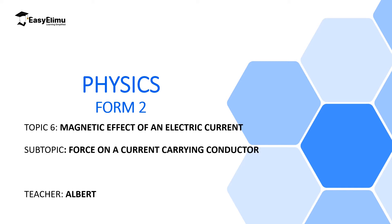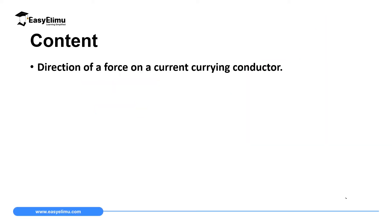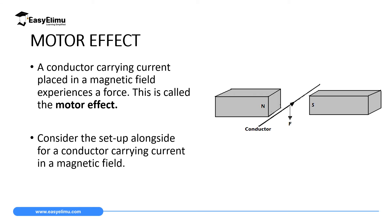In this lesson we're going to discuss the force on a current-carrying conductor. My name is Albert. By the end of this lesson, I expect you to be able to determine the direction of the force on a current-carrying conductor. If you place a current-carrying conductor inside a magnetic field, it will experience a force — this is what we call the motor effect.